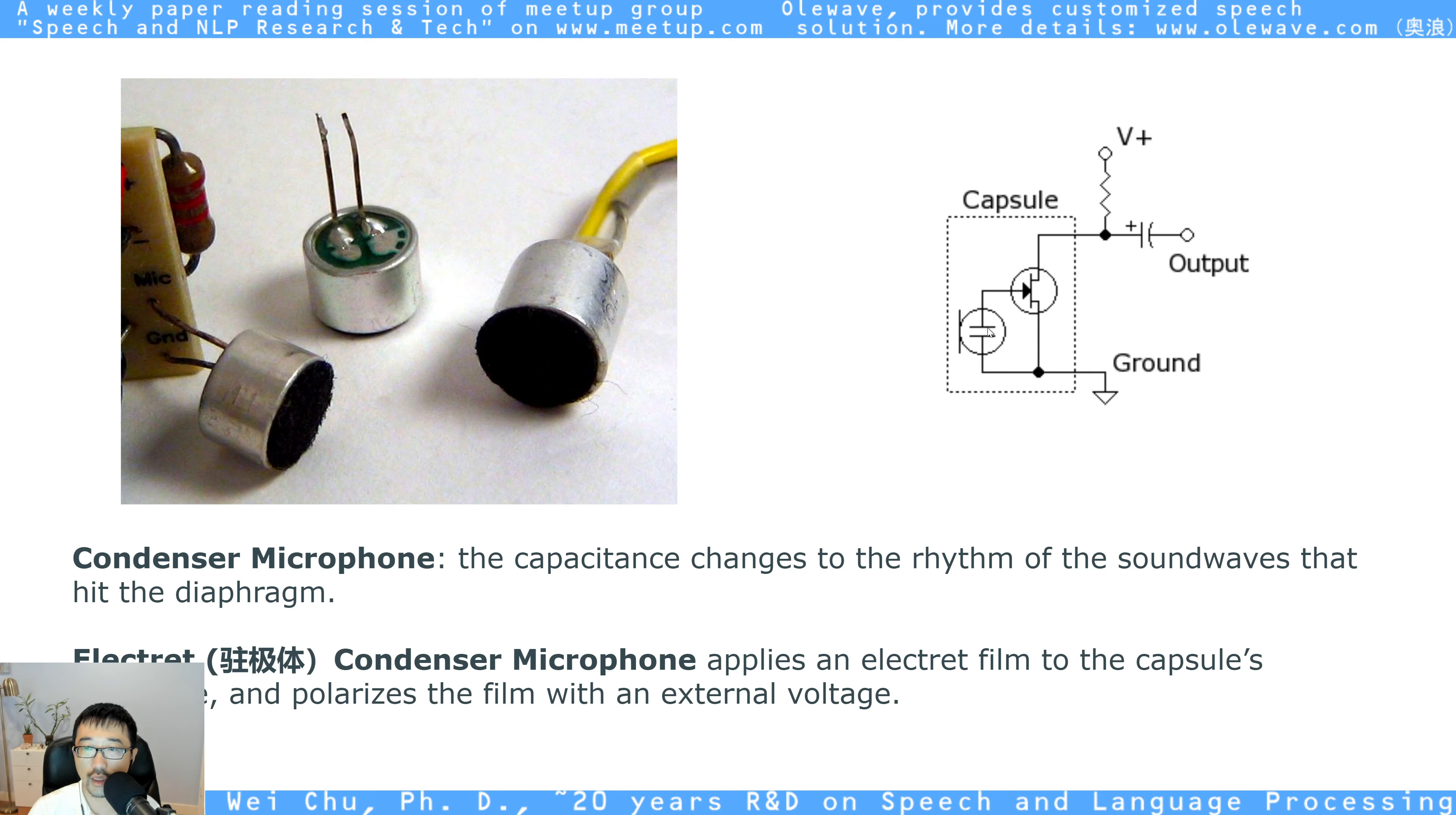So what does it do? So it does some extra things. Instead of the capacitor alone, they have a triode. It has a voltage on top of this capsule's backplate and polarizes the film with an external voltage. So you may ask why people do this. Because it makes the microphone more sensitive. This is why for a microphone or headset which is only about $20 from Amazon, it's not that sensitive.